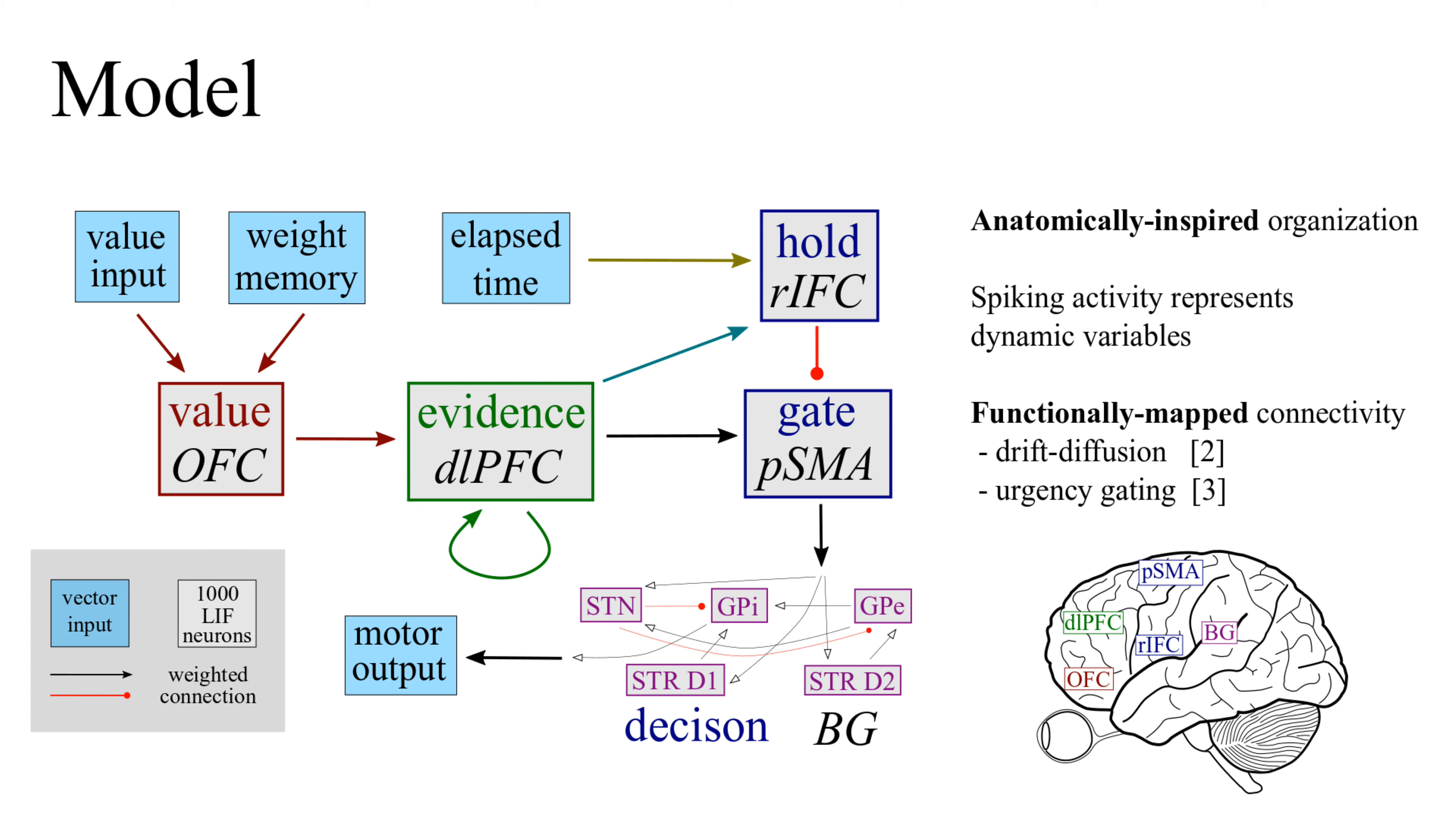Each population contains 1,000 spiking leaky integrate and fire neurons, whose activity represents dynamic decision variables. To specify these variables and their functional transformations, we drew from two cognitive theories of decision-making, the drift-diffusion model and the urgency-gating hypothesis.